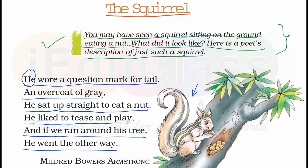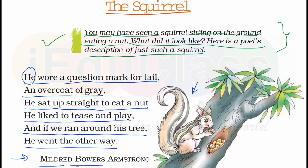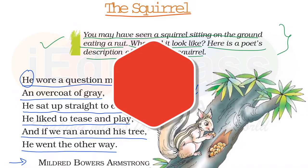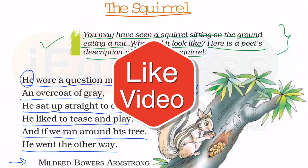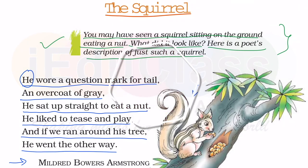This poem is written by Mildred Bowers Armstrong. The poet describes the squirrel in his garden — describing its body and how it looks.